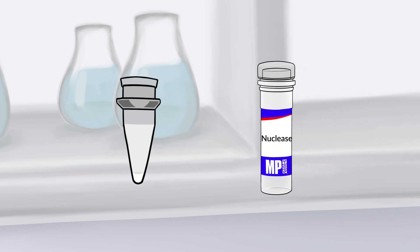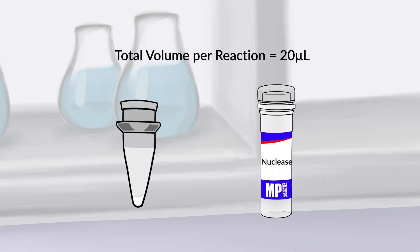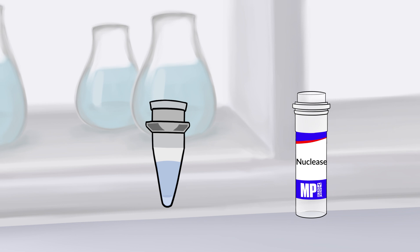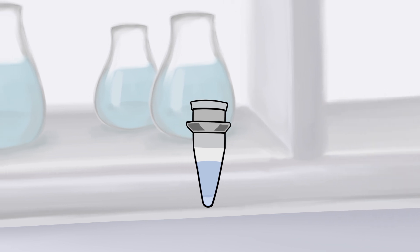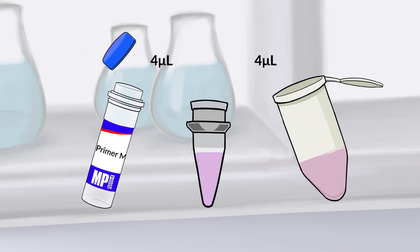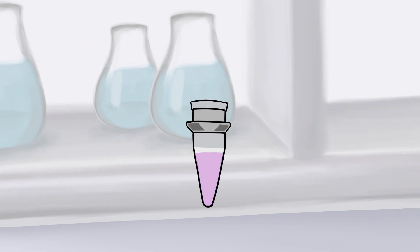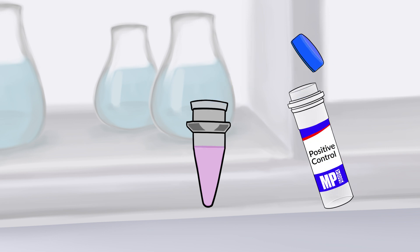Determine the volume of nuclease-free water needed to add to each reaction bead's tube. The total volume per reaction should be 20 microliters. Add the calculated volume of nuclease-free water to each tube. Pipet up and down to dissolve the reaction beads. Now add 4 microliters of primer mix and up to 4 microliters of sample to each tube. Add 1 microliter of controls to the appropriate tubes.